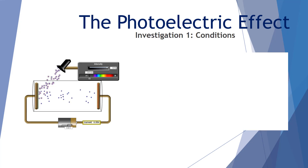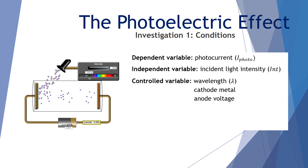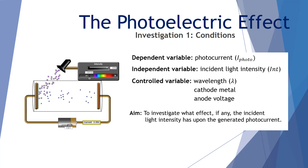Let's look at our conditions. For this investigation we'll be using a dependent variable of the photocurrent, an independent variable — the one we're going to change — of the incident light intensity. Some of the controlled variables we have are the wavelength of light, the cathode metal, and the anode voltage. The aim of our investigation is to investigate what effect, if any, the incident light intensity has upon the generated photocurrent.